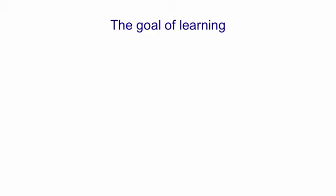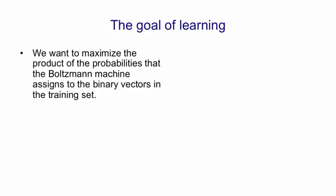What the algorithm is trying to do is build a model of a set of input vectors, though it might be better to think of them as output vectors. What we want to do is maximize the product of the probabilities that the Boltzmann machine assigns to a set of binary vectors, the ones in the training set.